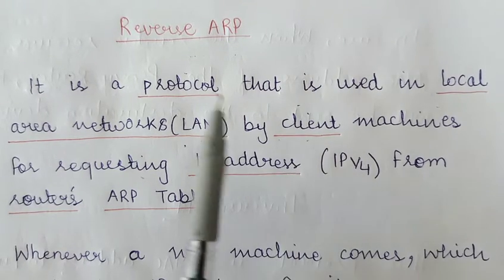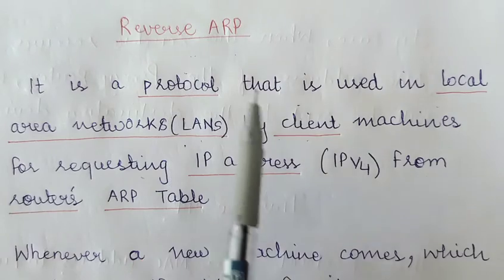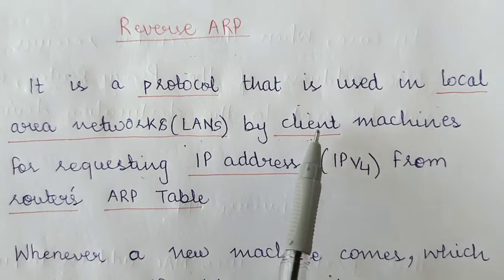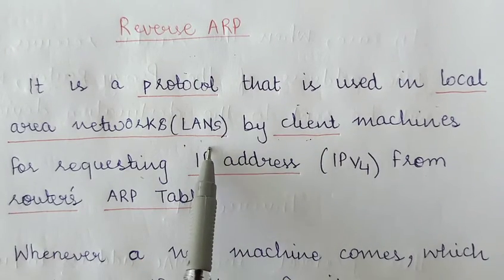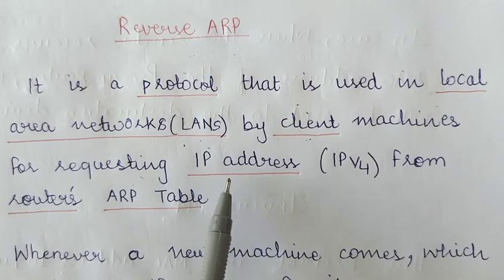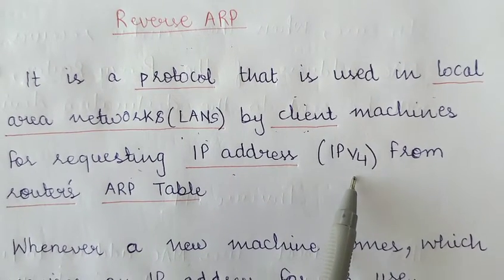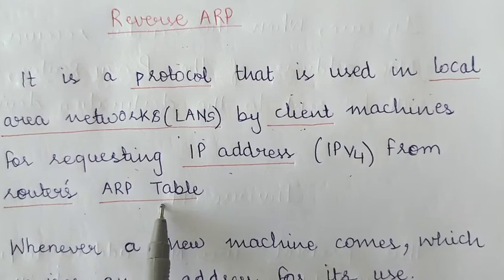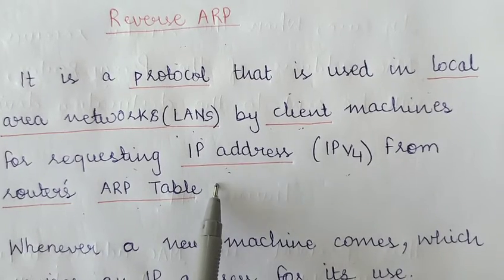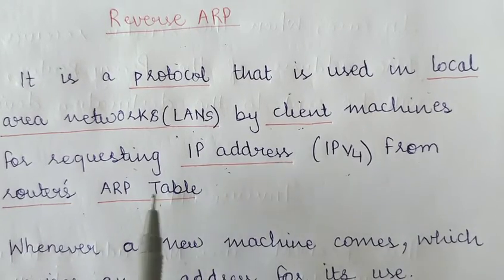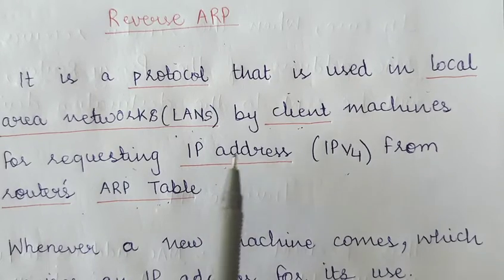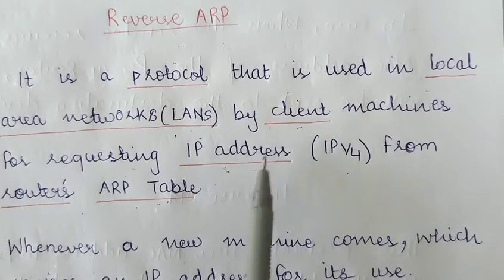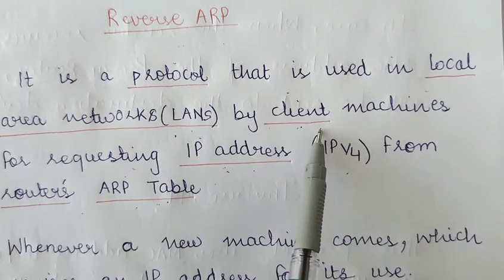reverse ARP is used by the client machines within a local area network for requesting the IP address — usually IPv4 — from the router's ARP table.